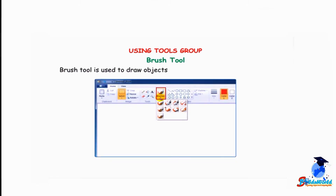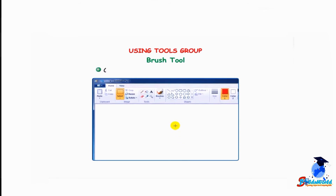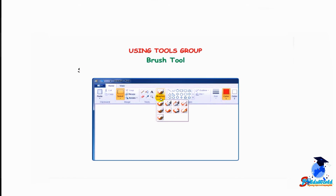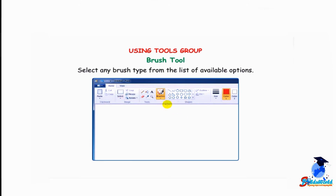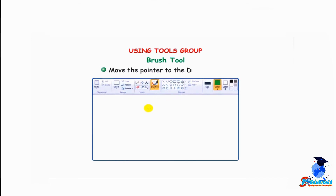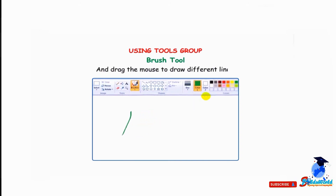Brush tool: the brush tool is used to draw objects with different kinds of brushes. To use it, click on the brush's drop-down arrow. Select any brush type from the list of available options. Select any color from the colors group. Move the pointer to the drawing area. Press and hold down the left mouse button and drag the mouse to draw different lines.